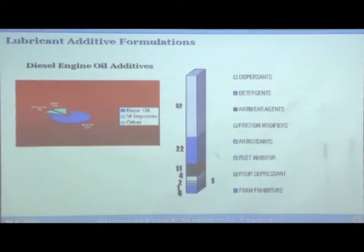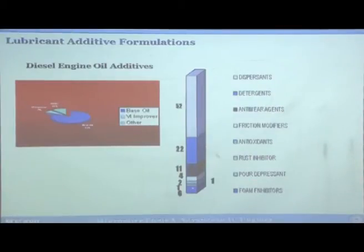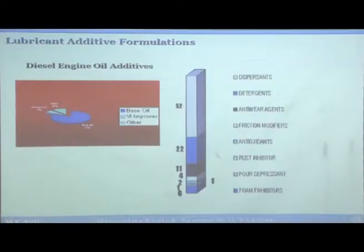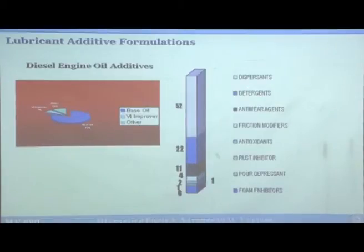The different additives in the package include dispersants, detergents, antiwear agents, friction modifiers, antioxidants, rust inhibitors, pour point depressants, and foam inhibitors. These are the different types of additives used. You should be familiar with these names and groups of additives.